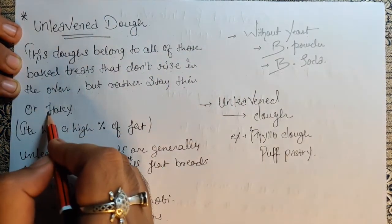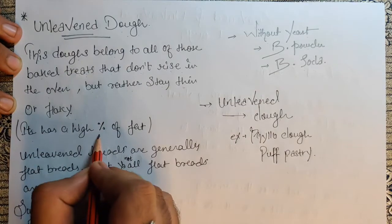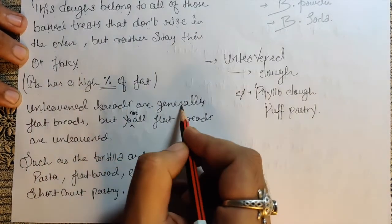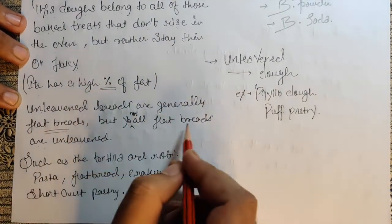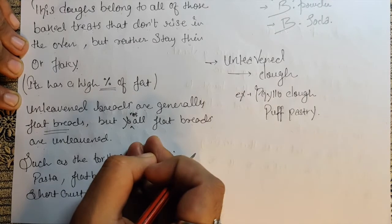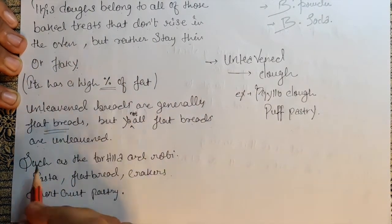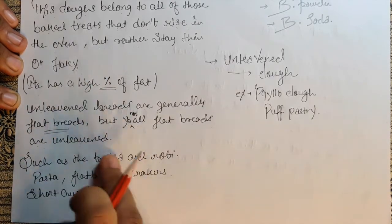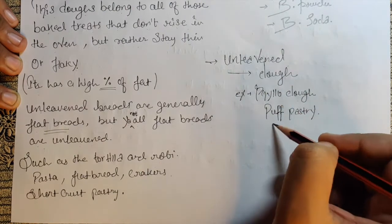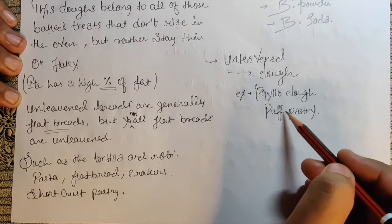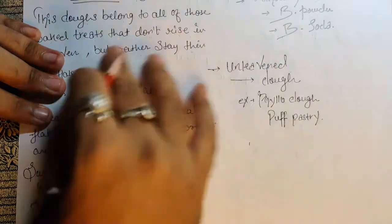Rather, unleavened dough stays thin and flaky because it has a high percentage of fat. Unleavened breads are generally flatbreads, but not all flatbreads are unleavened — some flatbreads use baking soda, baking powder, or yeast as per requirements. Examples include tortillas, roti, pasta, flatbreads, crackers, and shortcrust pastry. Also, puff pastry is unleavened — we don't use yeast, baking soda, or baking powder; it is very flaky due to high fat content.